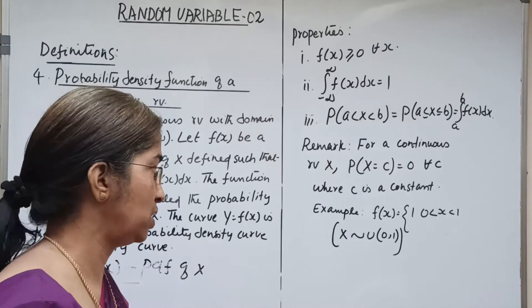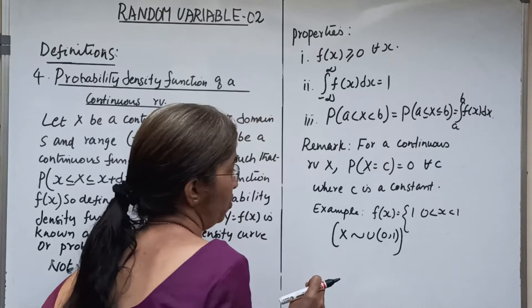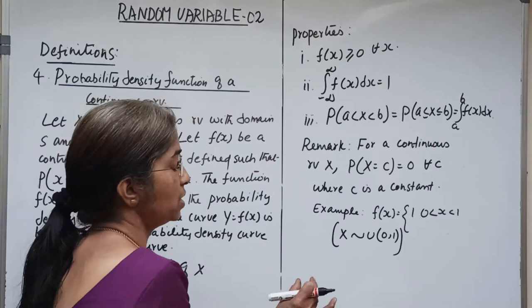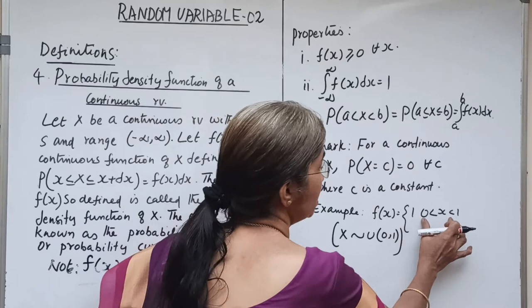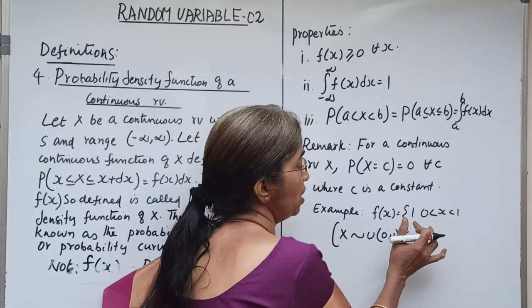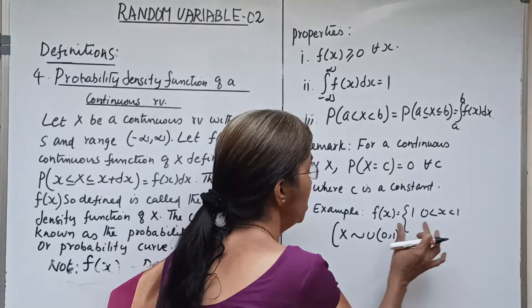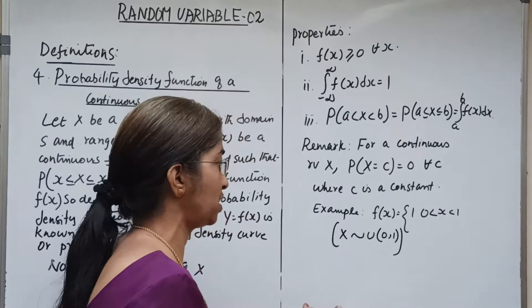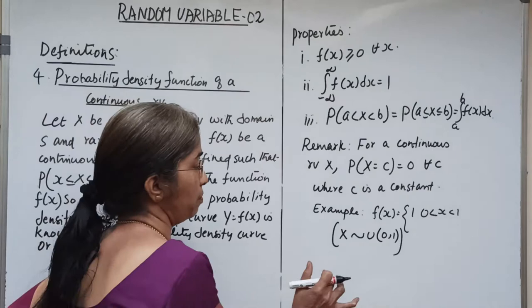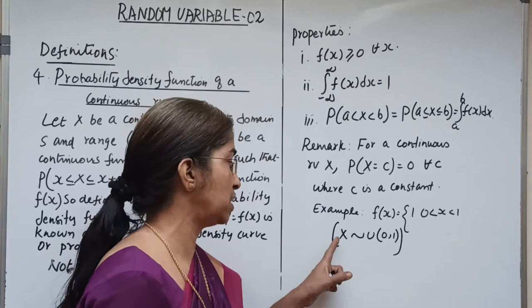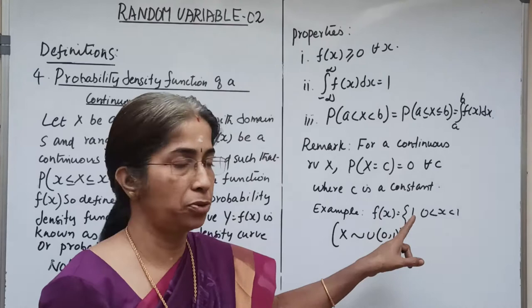An example of a continuous PDF: f(x) equals 1 for 0 less than x less than 1, or 0 less than or equal to x less than or equal to 1. This is a continuous random variable defined over the interval 0 to 1, with f(x) equal to 1 throughout. This is known as the uniform distribution or rectangular distribution over the interval 0 to 1, where f(x) is a constant. It is represented as X uniform over (0,1), which implies f(x) equals 1 for 0 less than x less than 1.